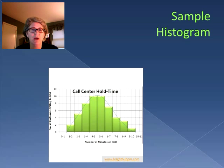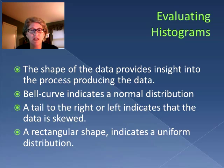When we look at a histogram, we notice that the shape of the data provides insight into the process producing the data. A bell curve indicates a normal distribution. If we have a tail to the right or left, that indicates the data is skewed. A rectangular shape indicates a uniform distribution. So by looking at the distribution of the data, we have a sense for what kind of process we have.